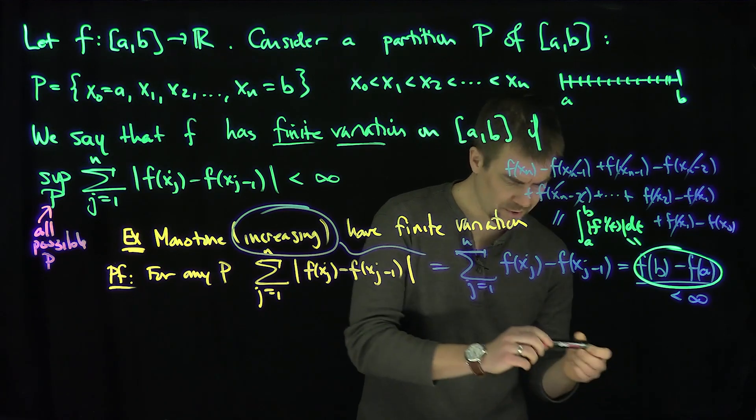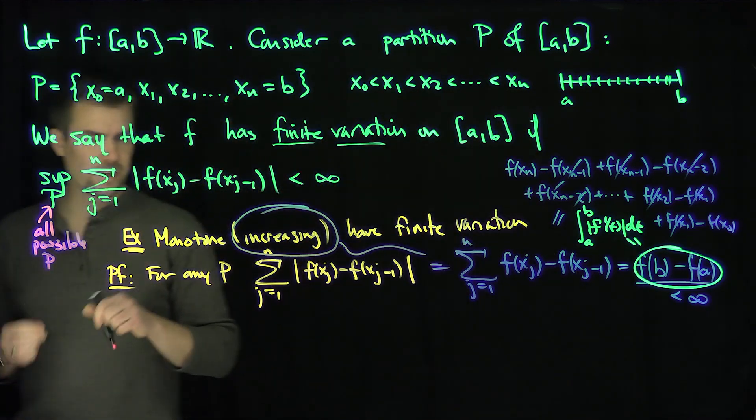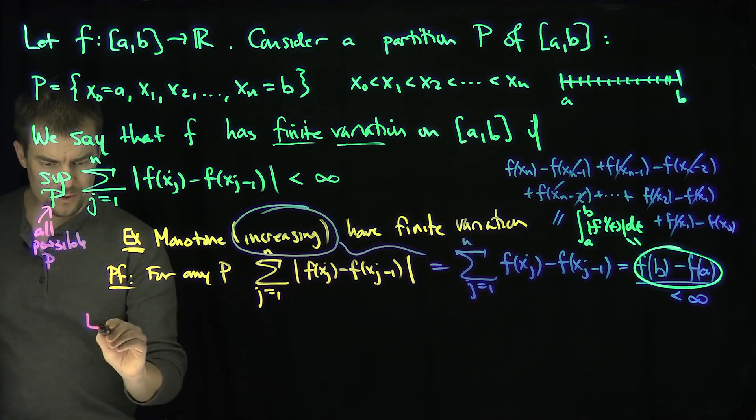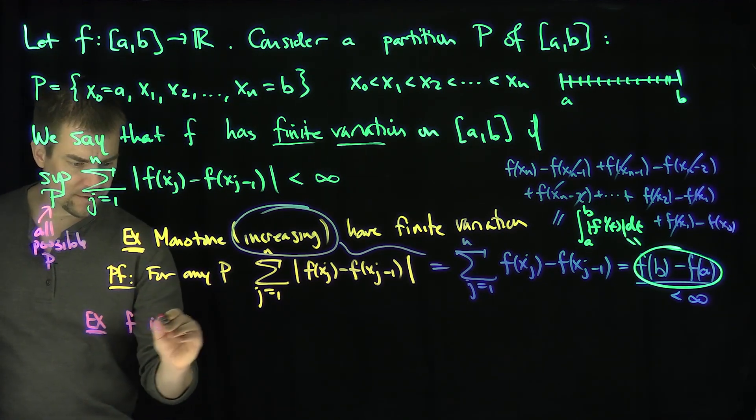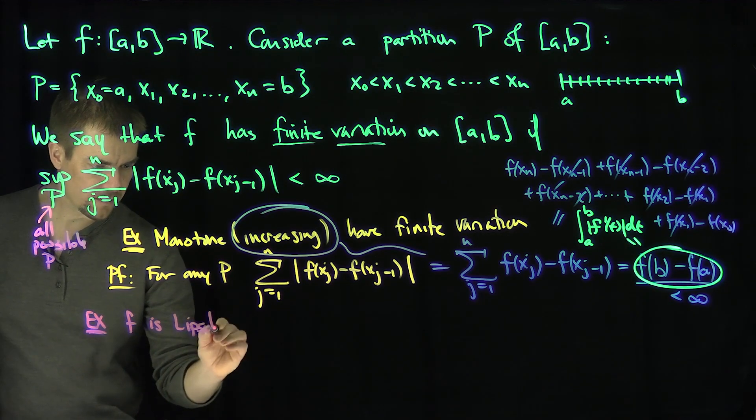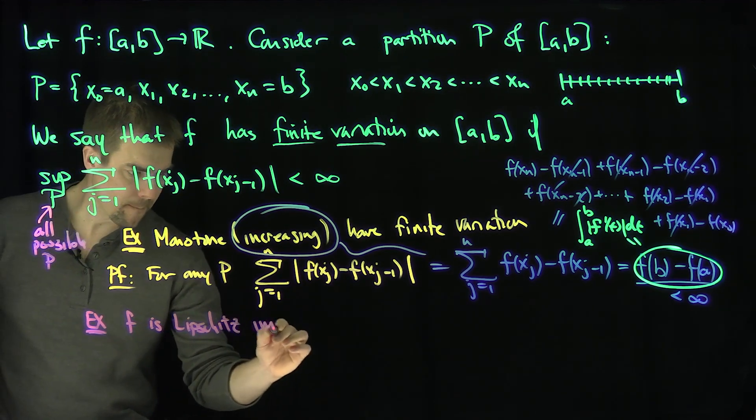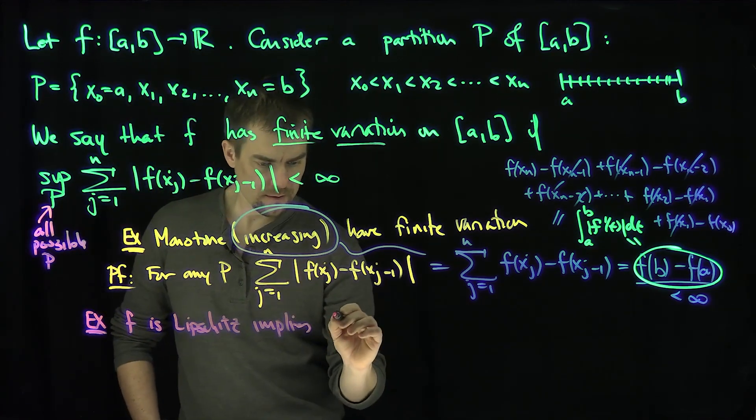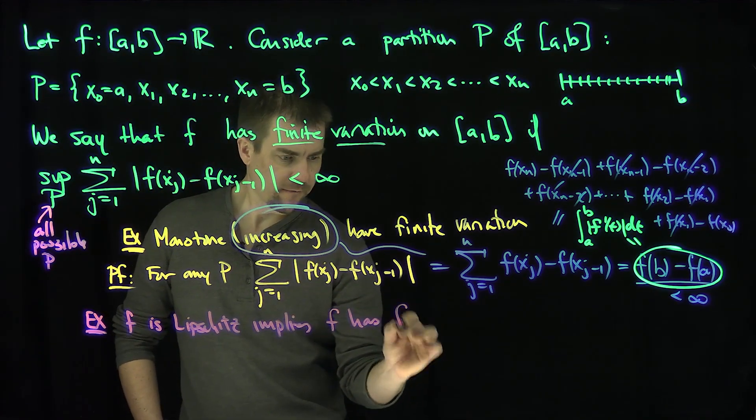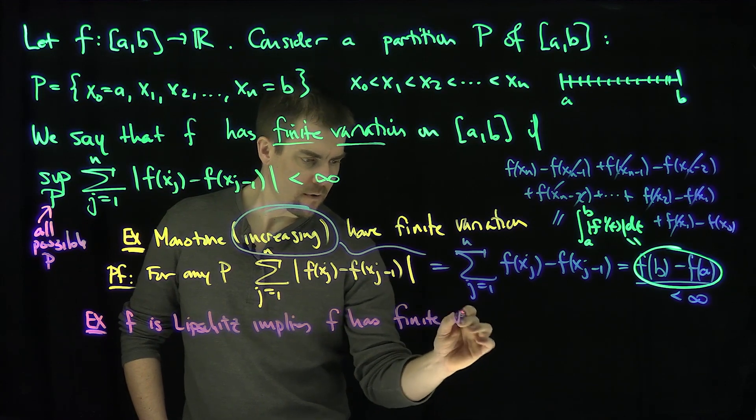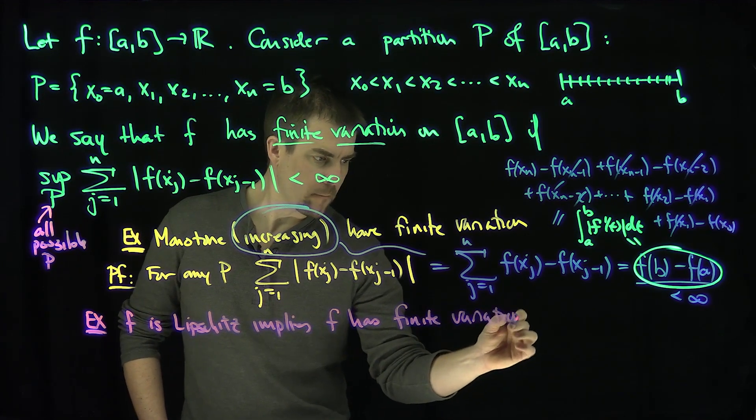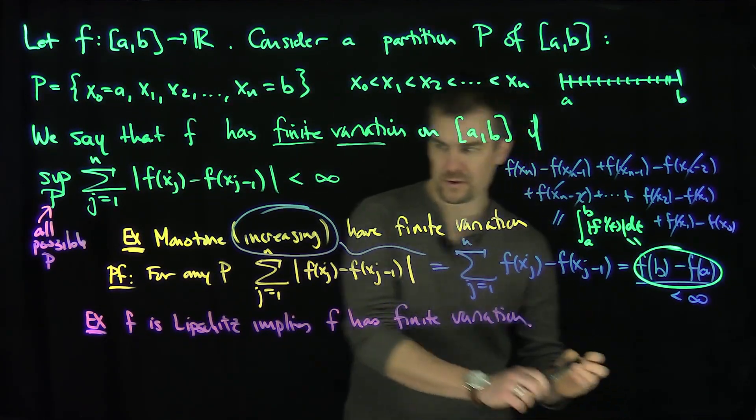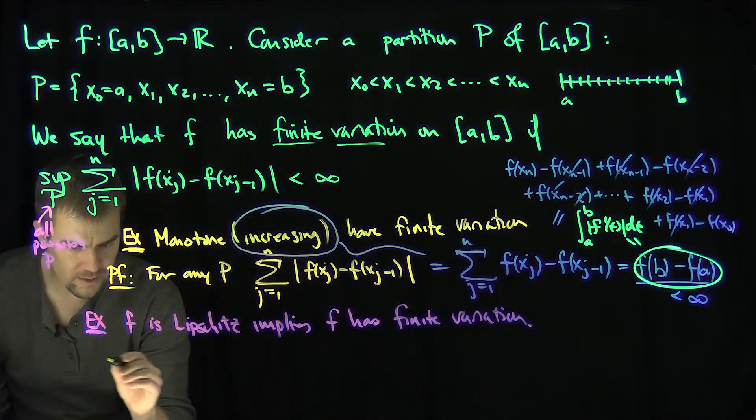Let me give another example. Another classic example is that if your function is Lipschitz, then it's also bounded variation. So: f is Lipschitz implies f has finite variation. I'm going to do a similar trick. Suppose f is Lipschitz, which means for any P,